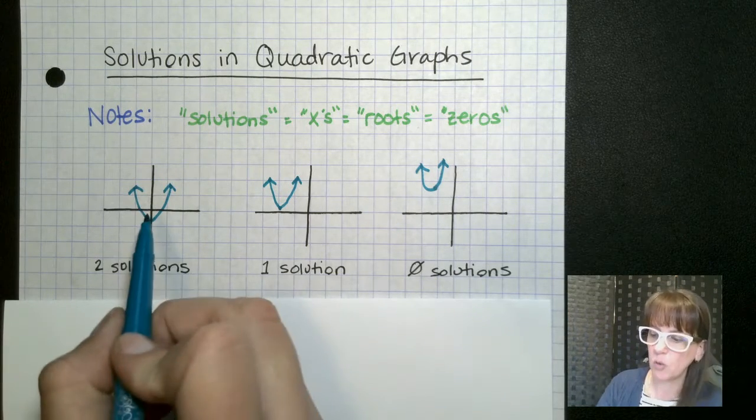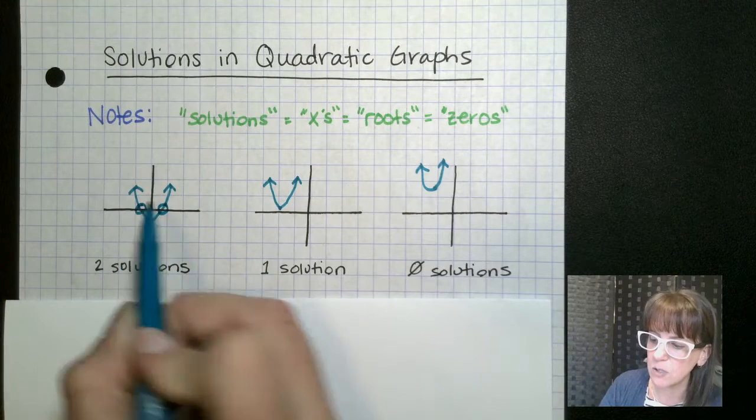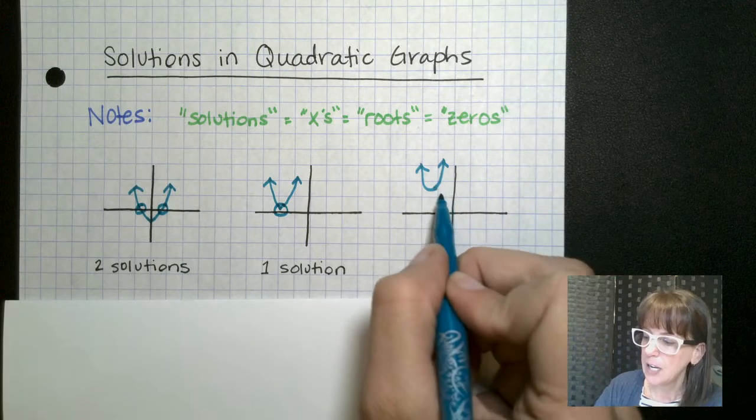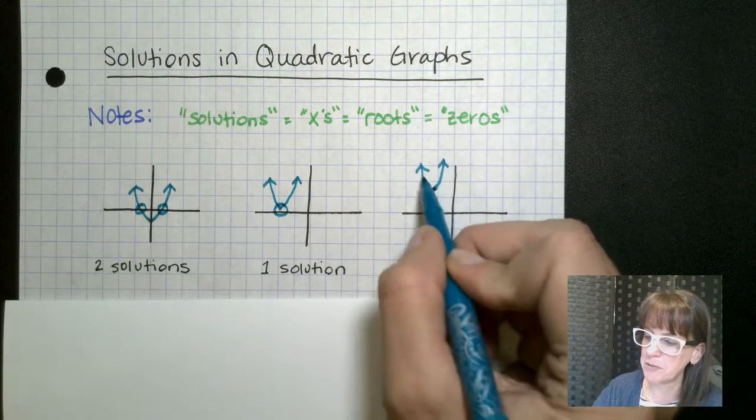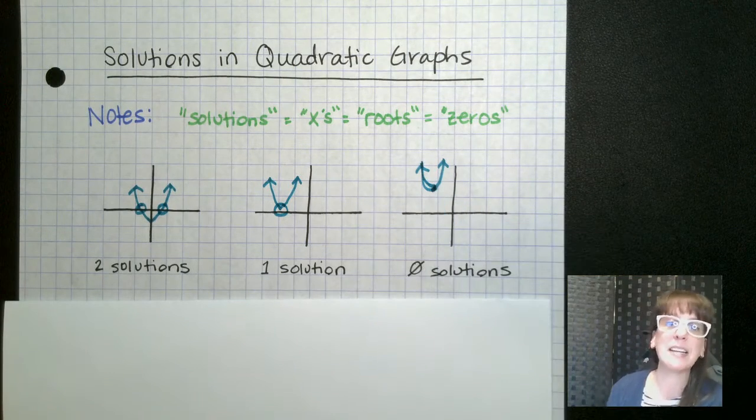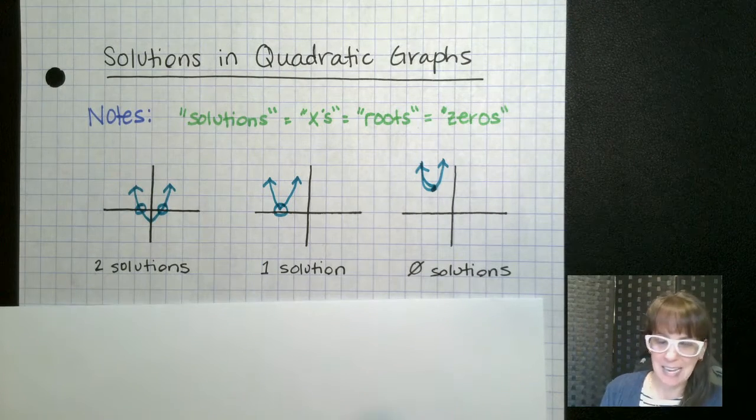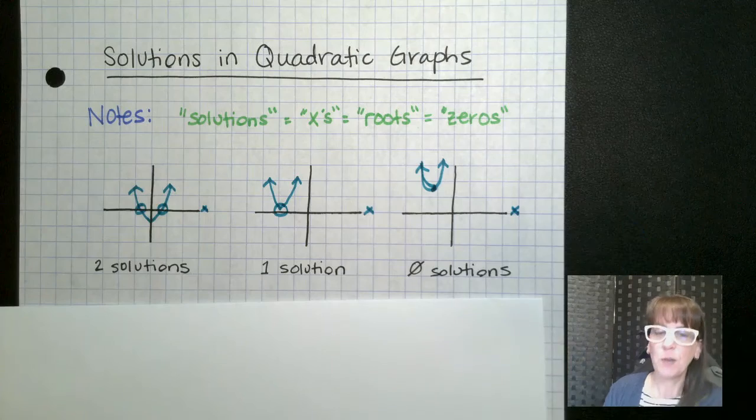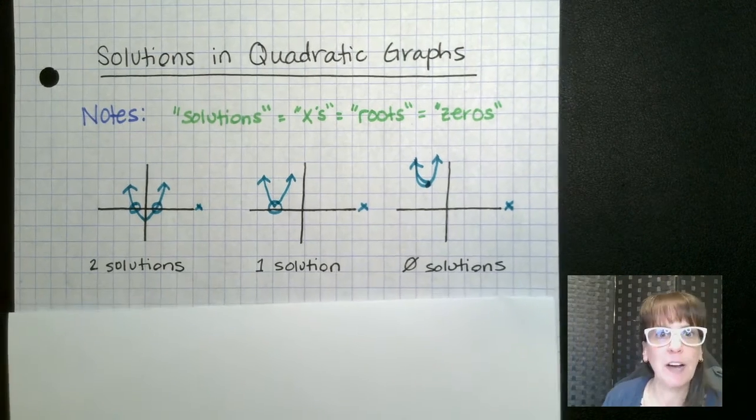Two solutions means that it crosses our x-axis in two places. One solution means that it crosses at one place. No solutions means it does not cross our x-axis at all. Remember, this is our x-axis right along here. So that's what that looks like.